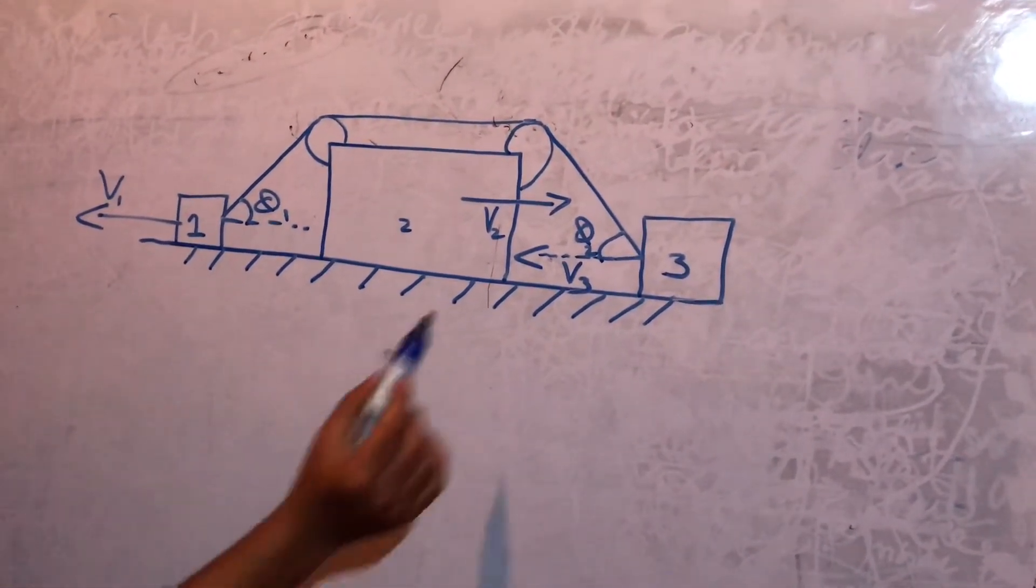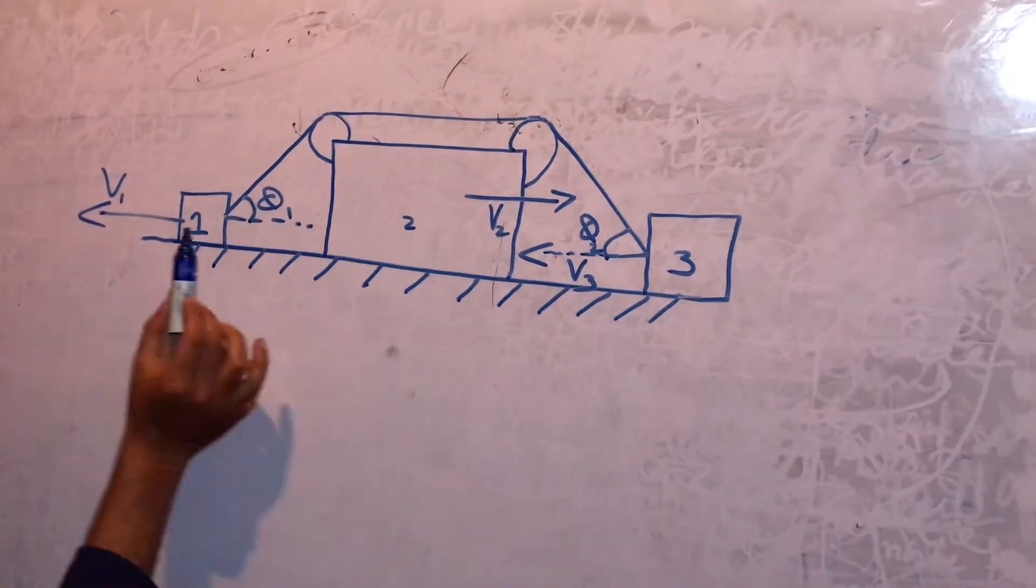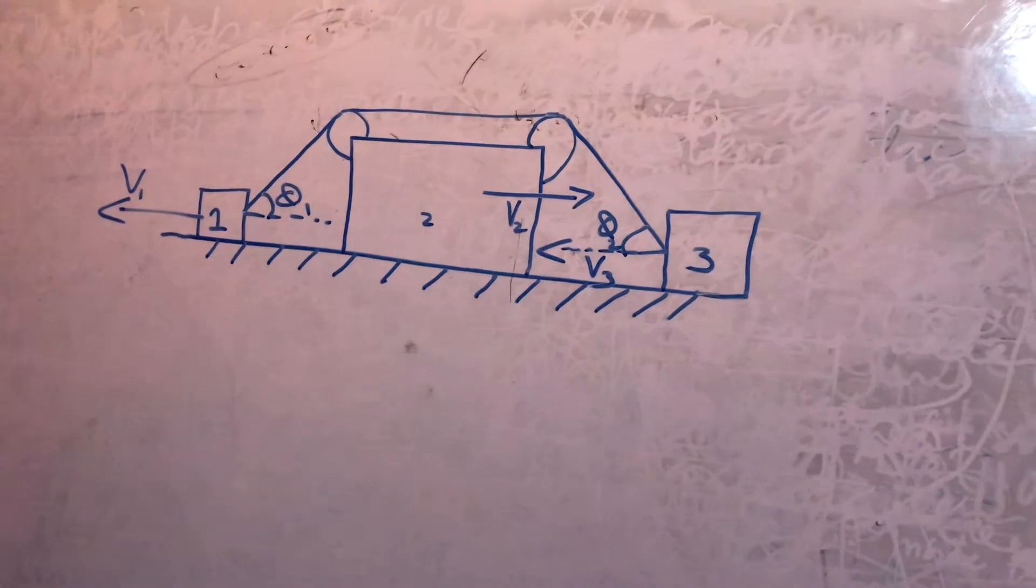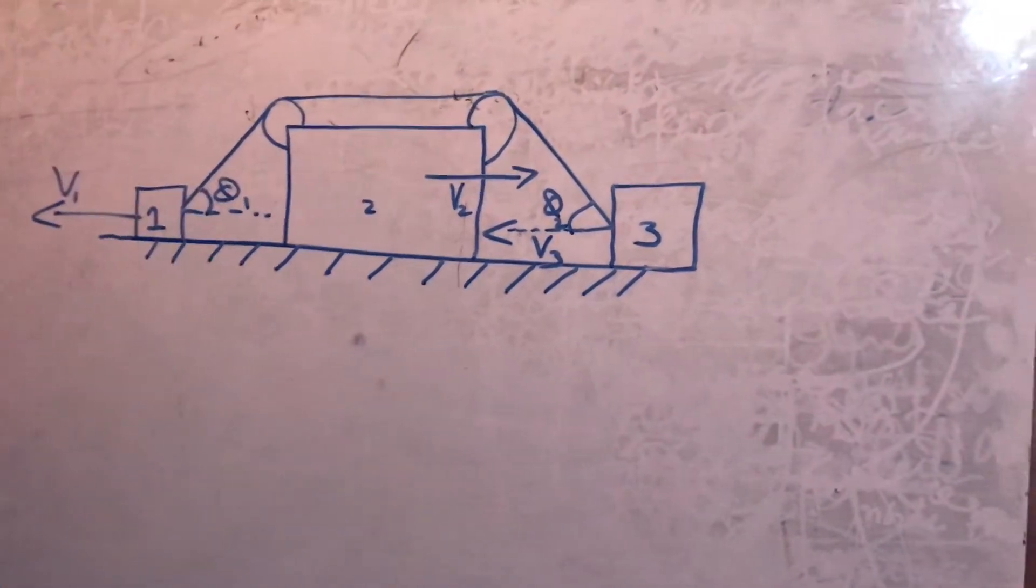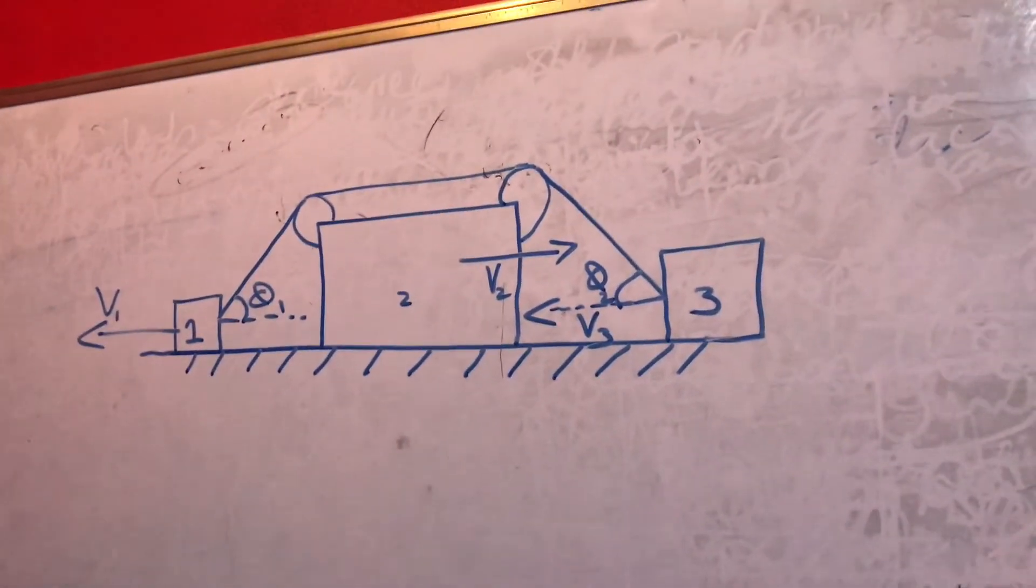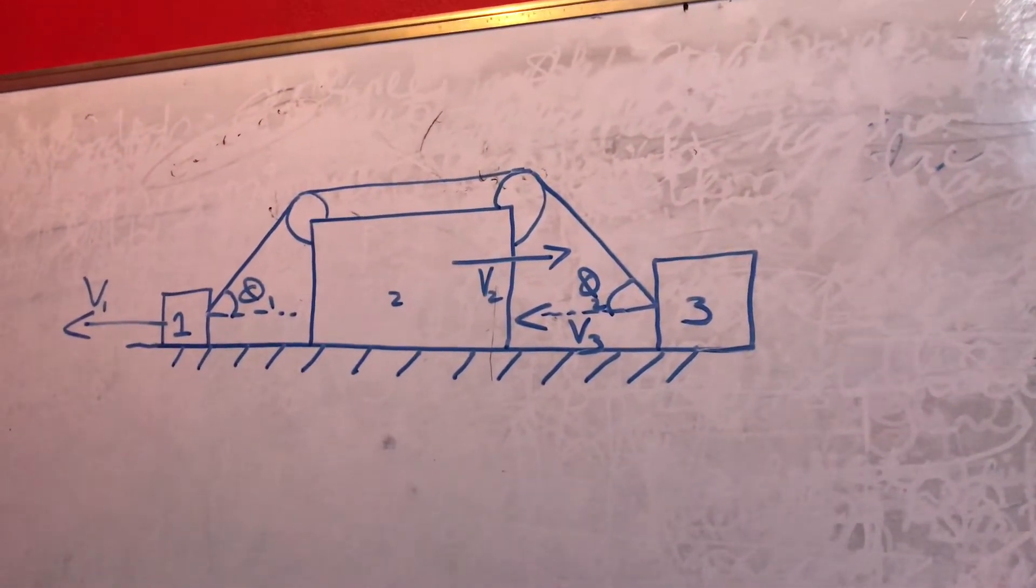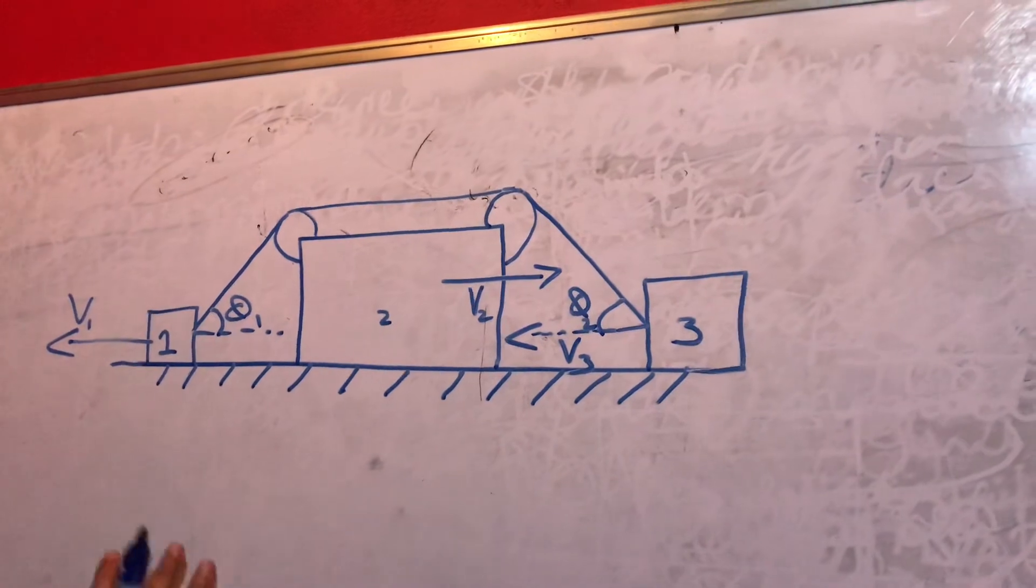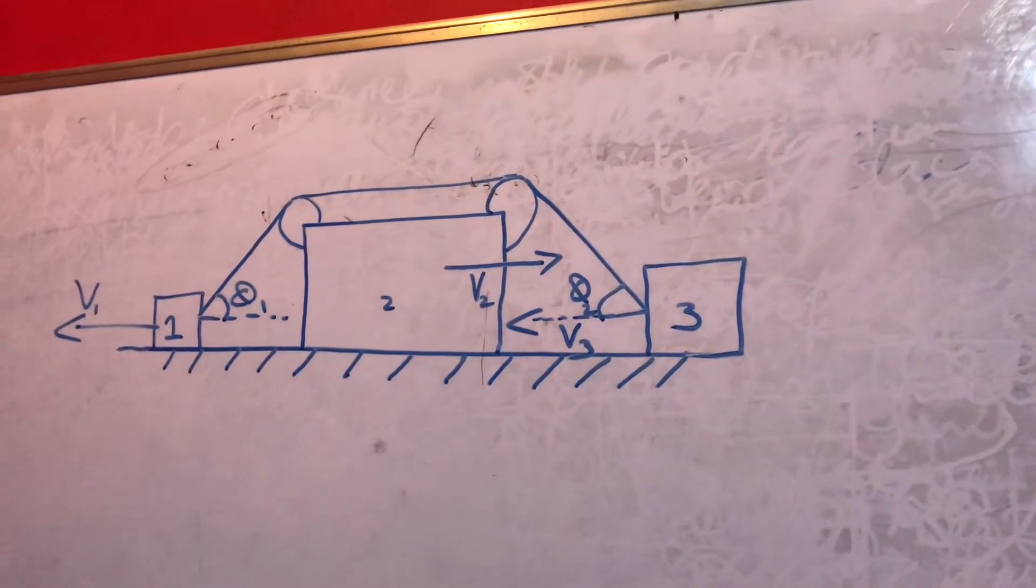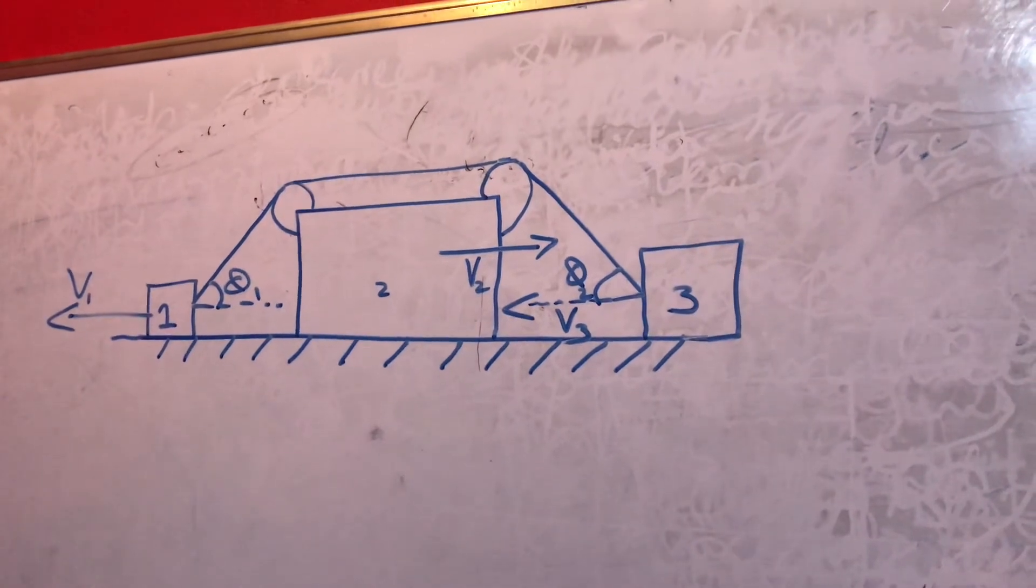So what we have to do is we have to find this v3 in terms of v1 and v2. This is a very big and huge problem, and I need to solve the question by using the concept of relative velocity, which I hope you will understand and you must have learned in the places where you are studying.